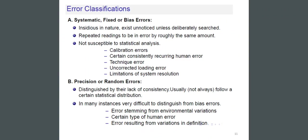Sources of random errors include errors stemming from environmental variations, certain types of human error, and errors resulting from variations in definition.